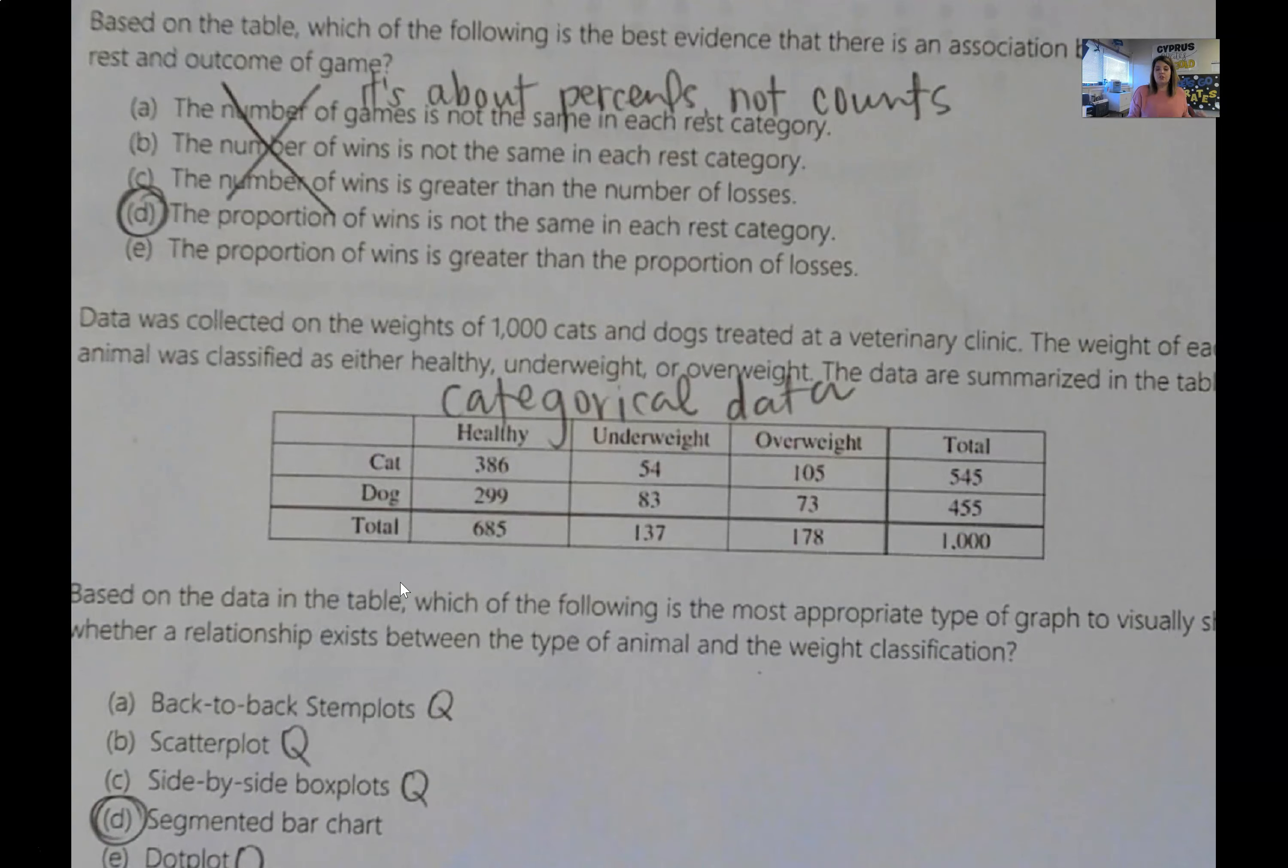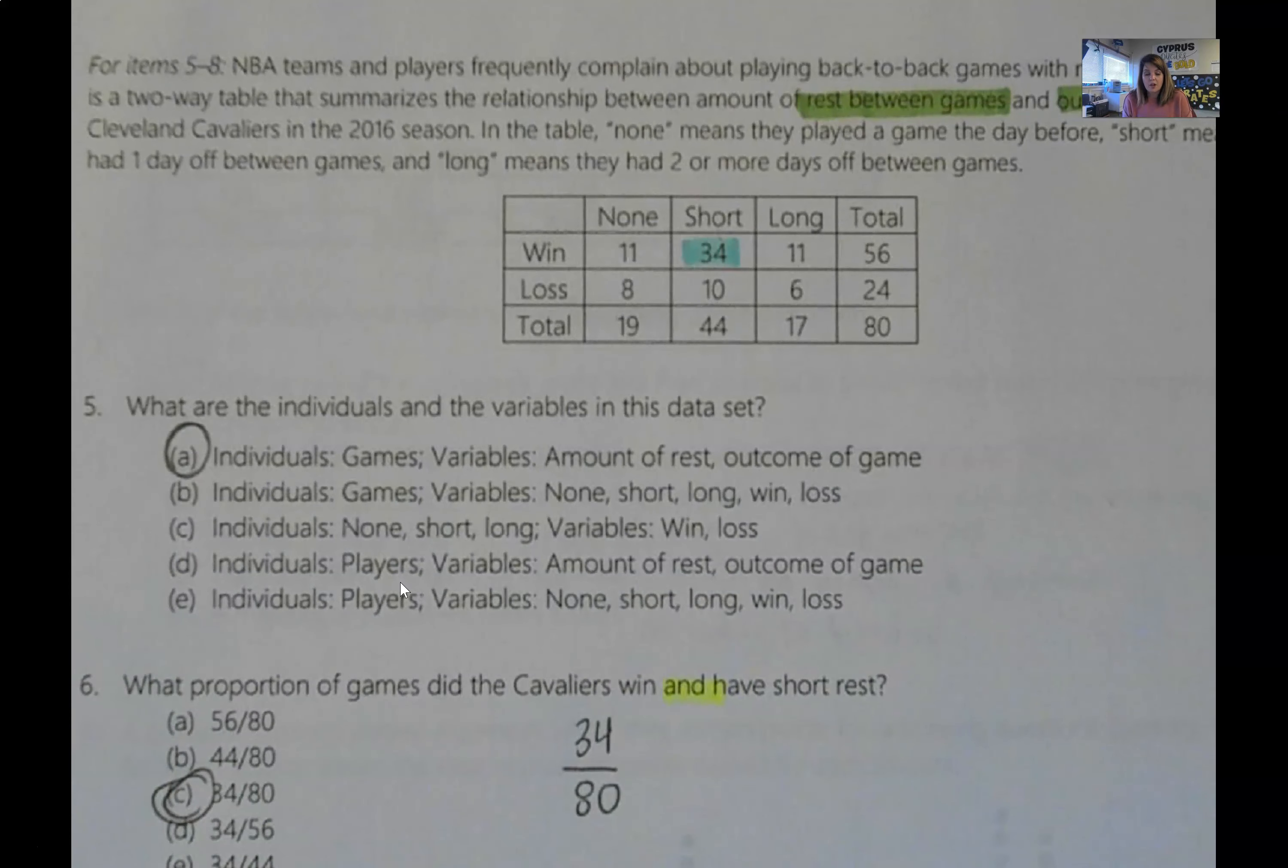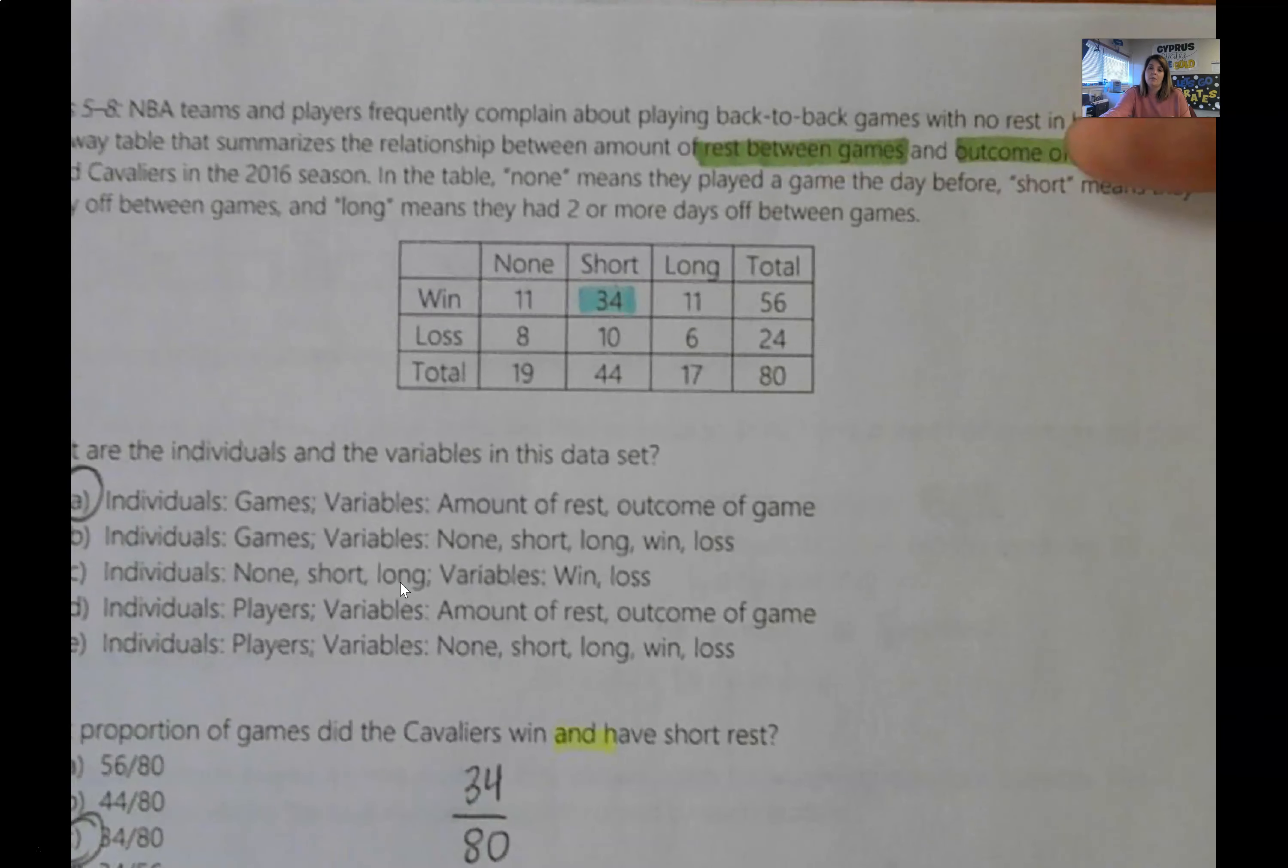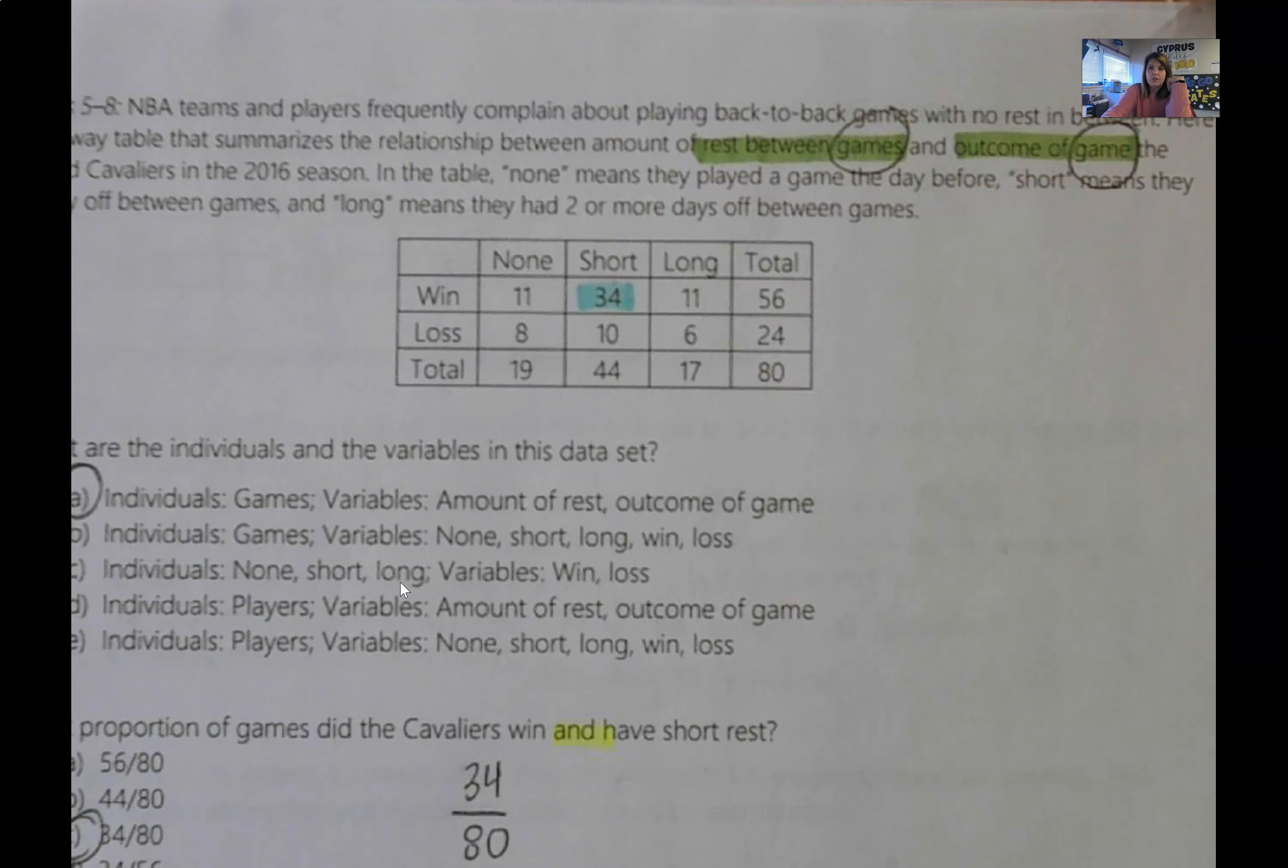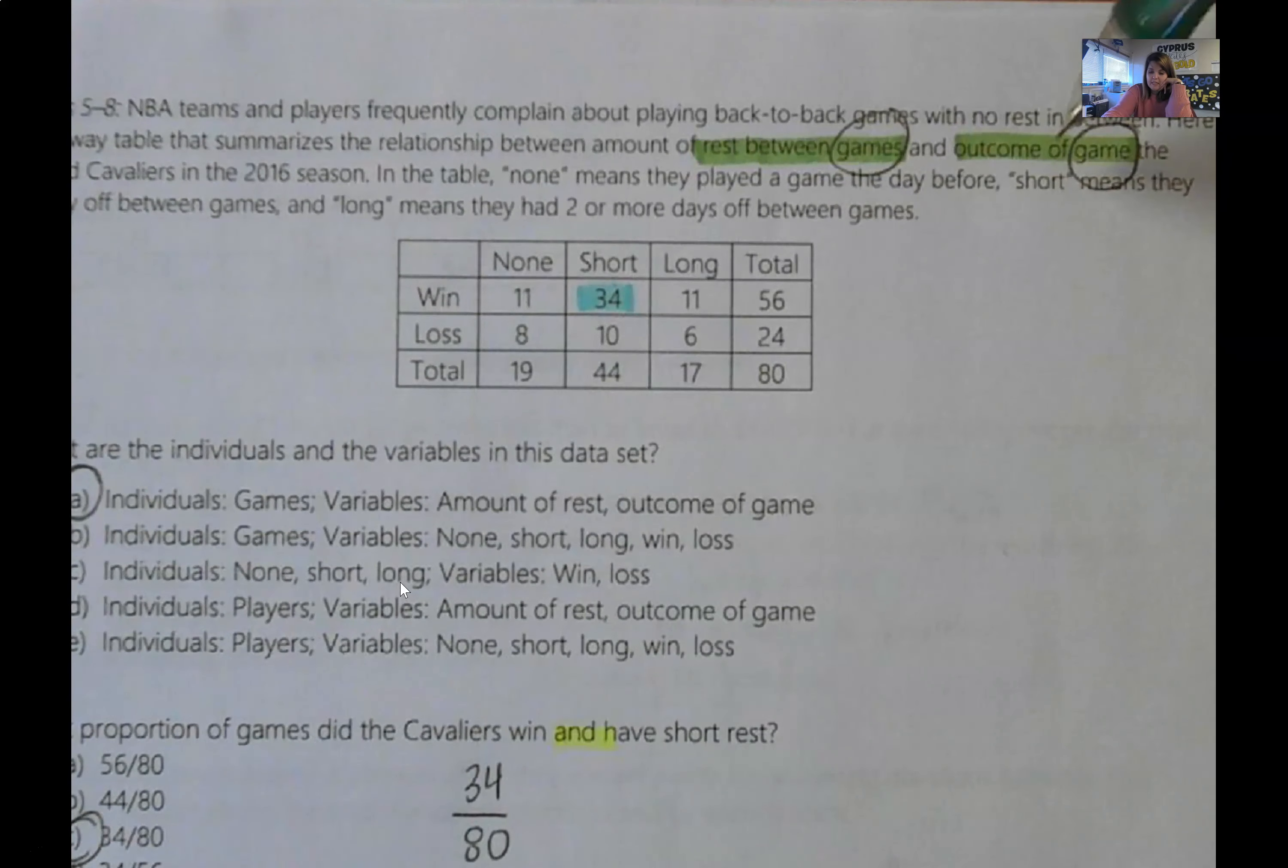Page two has to do with reading a two-way table. I had a really hard time deciding if the individuals were the games or the players. And I'll be honest and tell you that I got this one wrong at first. I thought that it was the players. Once I realized that I got it wrong, I went back up through the prompt and highlighted what they told me. And they told me that this table summarizes the relationship between the rest between games and the outcomes and the outcome of a game. So notice in both of these variables, it says game. So that's how I was able to understand, okay, the answer is alpha. The individuals are the games. And then remember your variables, they give you up here in the prompt. So amount of rest and outcome of game.